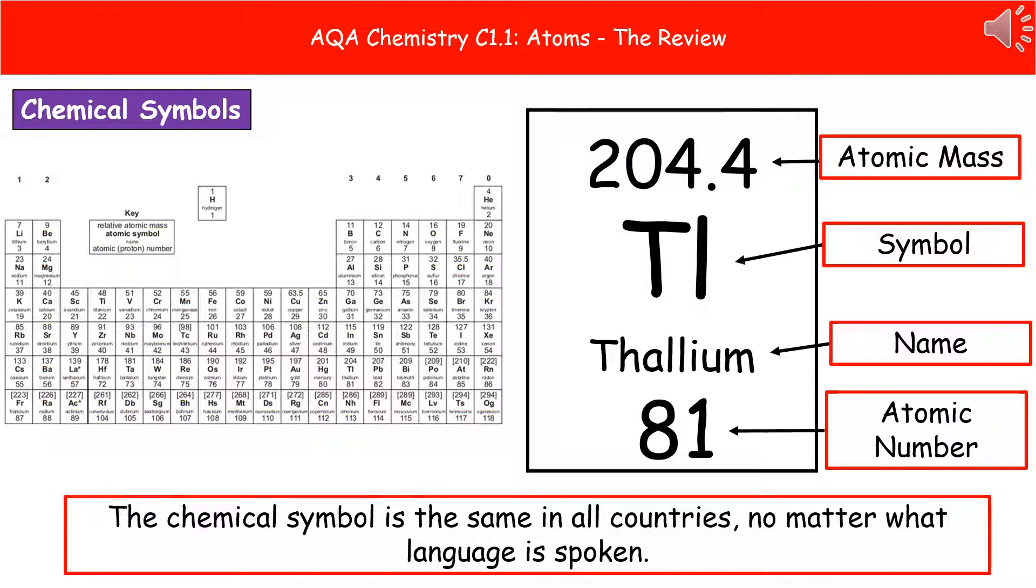Now one of the things that we use in chemistry a lot is the periodic table, which you can see on the left there, and that's actually one you're going to get in your exam on AQA. Now the periodic table, as you can see,